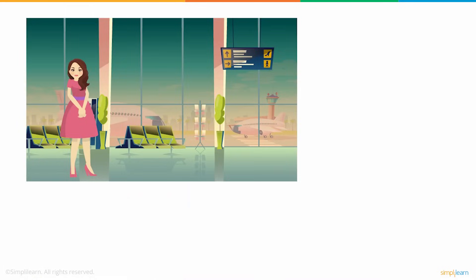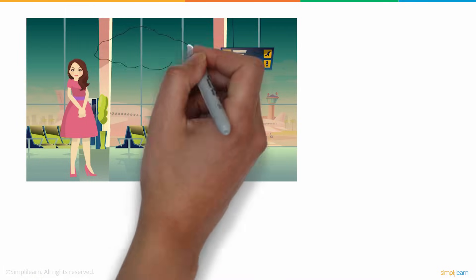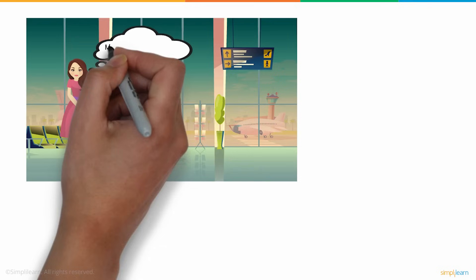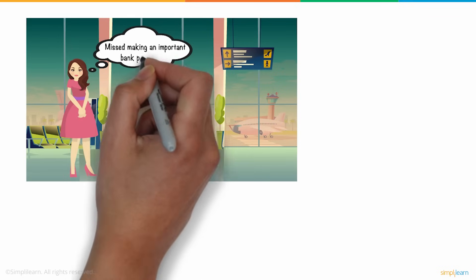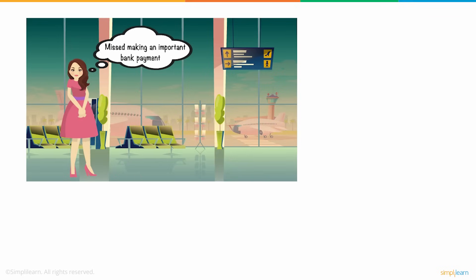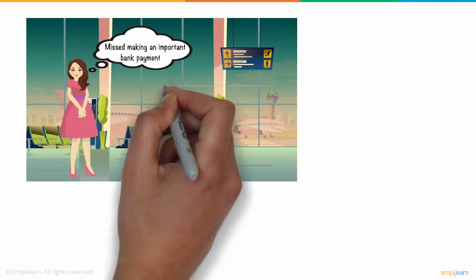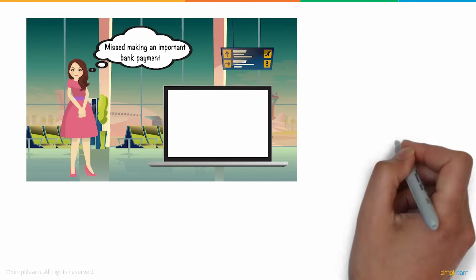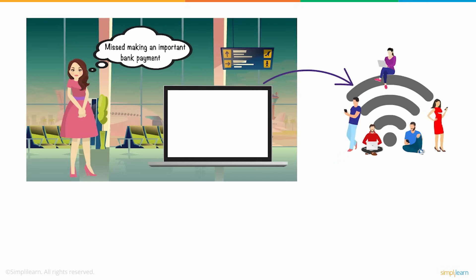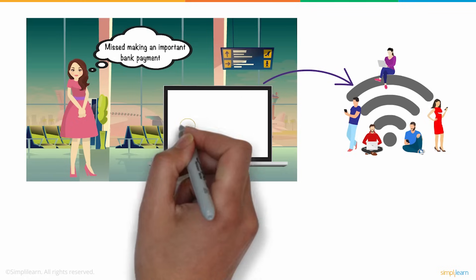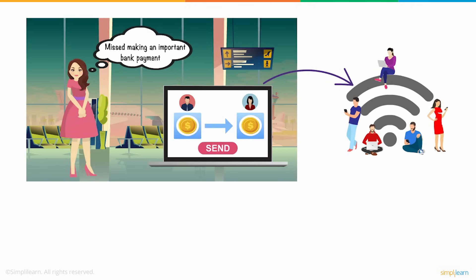Jude is waiting at the airport to hop on her flight back home when she realizes that she missed making an important bank payment. She connects her laptop to the public Wi-Fi at the airport and goes ahead to carry out the bank transaction. Everything goes well and Jude completes her transaction.